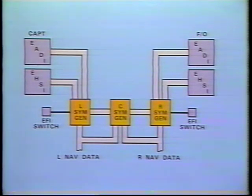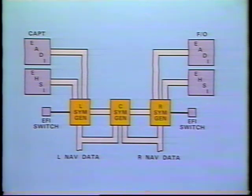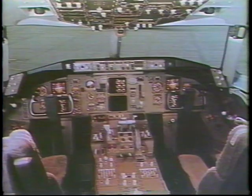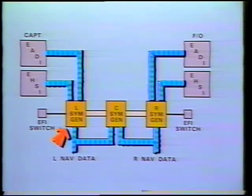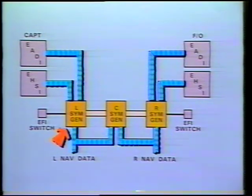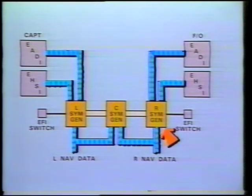The information displayed on the EADI and EHSI is provided by three Symbol Generators, which process sensor navigation and guidance data. Source selector switches on the captain's P-1 panel and first officer's P-3 panel select which Symbol Generator drives the displays. The left Symbol Generator normally drives the captain's displays, and the right Symbol Generator normally drives the first officer's displays.